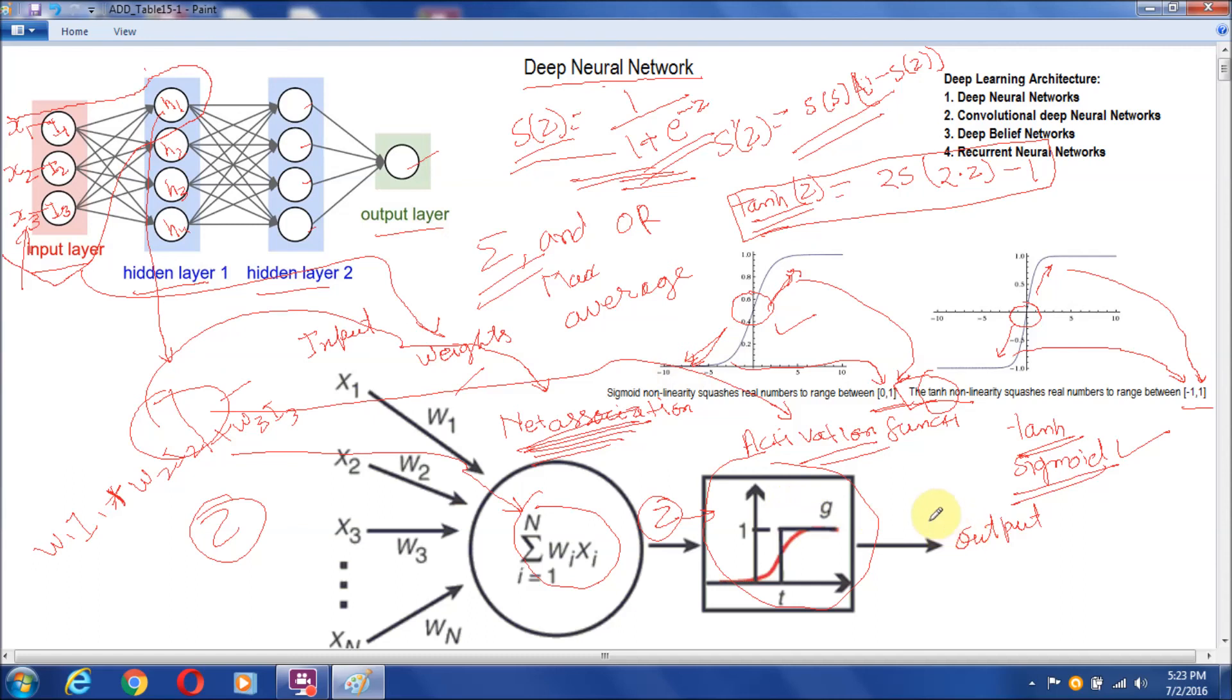Now after passing the activation function, when we pass this value z to the sigmoid function, it will give a value in the range of 0 to 1. Suppose it will be like z dash. Now this z dash will be the outcome of node h1 and it will pass through all other nodes of the second layer like here.